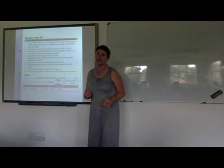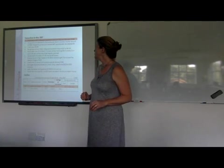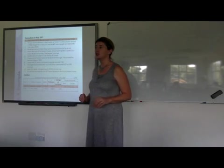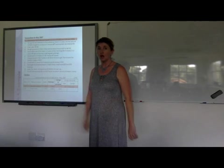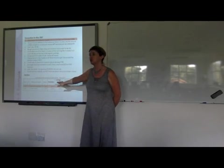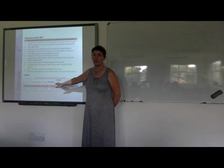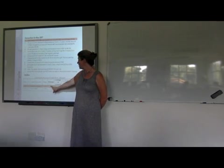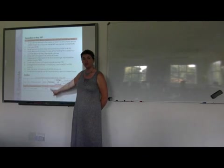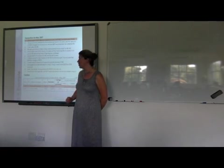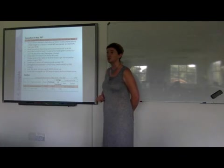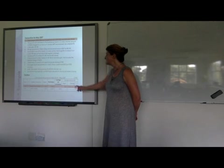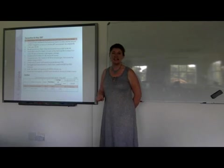Looking at the first transaction: paid cheque 34 to Beerman Supplies for stock 3,000 Rand and for stationery 560 Rand. We put it in the cash payments journal as normal. The only difference is that instead of having a trading stock column, I'm going to have a purchases column. Remember, purchases is an expense account that we are recording the stock in at this stage. Stationery will record exactly as normal.